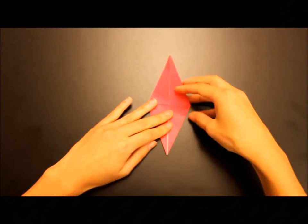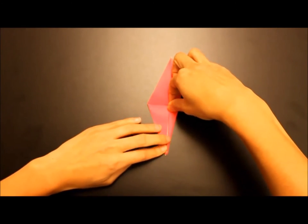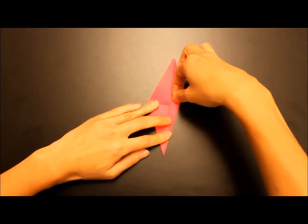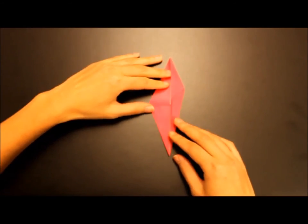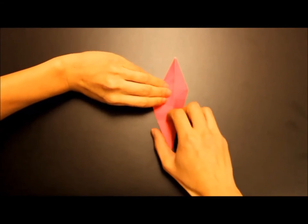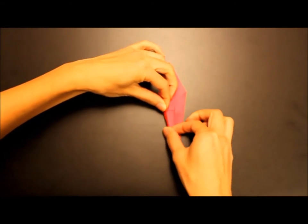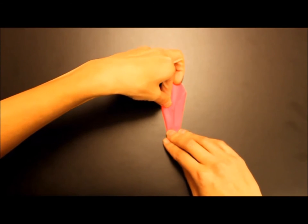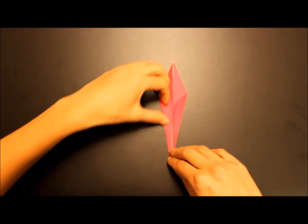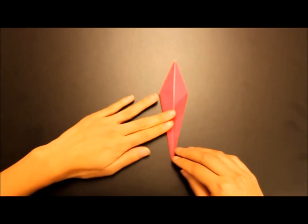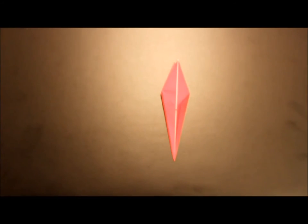Turn that piece of paper around and repeat. Again, you want to make nice aligned folds here and crease. Same thing on the other side. Make sure everything is aligned and looks very neat. You want to go ahead and crease. Should end up with something like this. Step eight.